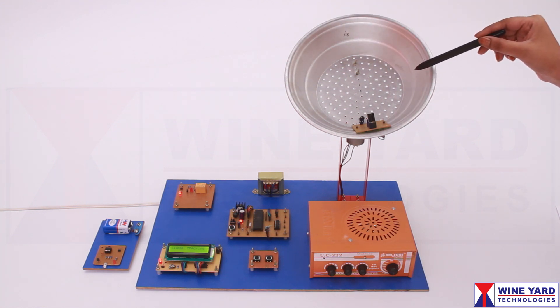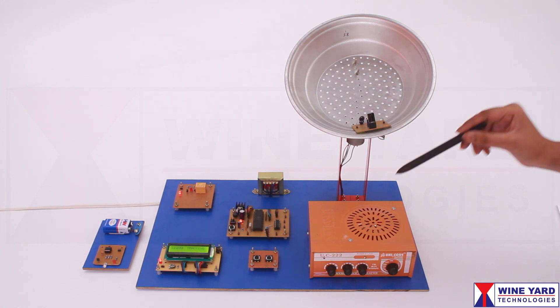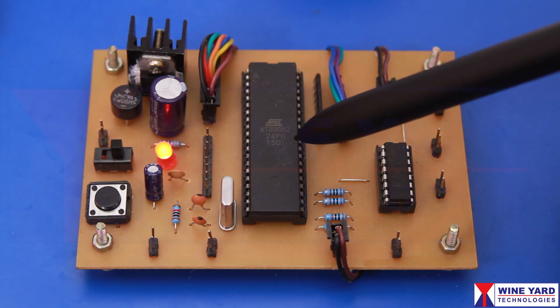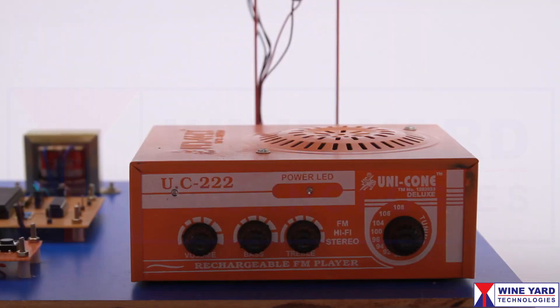Once the signal is detected by this T-Swap sensor, it sends an acknowledgement signal to the microcontroller. Immediately, the microcontroller stops the antenna rotation and switches on this FM receiver by using this relay.